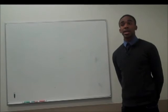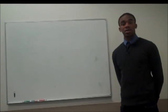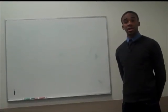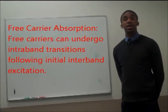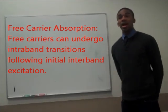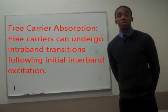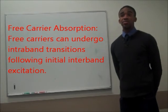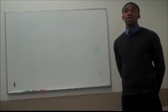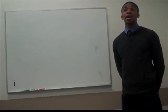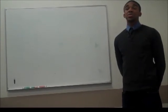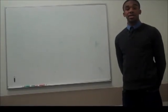In free carrier absorption, when a photon excites an electron into the conduction band, the electron is still able to move deeper into the conduction band with the absorption of more photons. With high carrier densities, large numbers of free electrons may be excited high into the conduction band, and large numbers of holes can be excited deep into the valence band. The net result is the reduction of the refractive index.